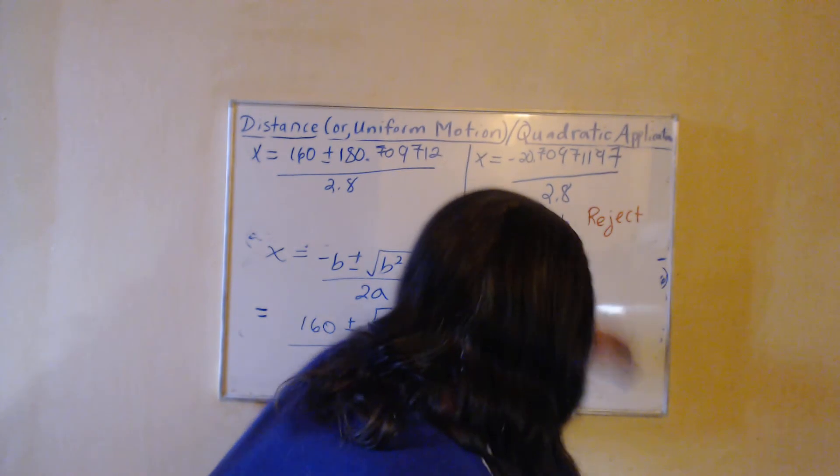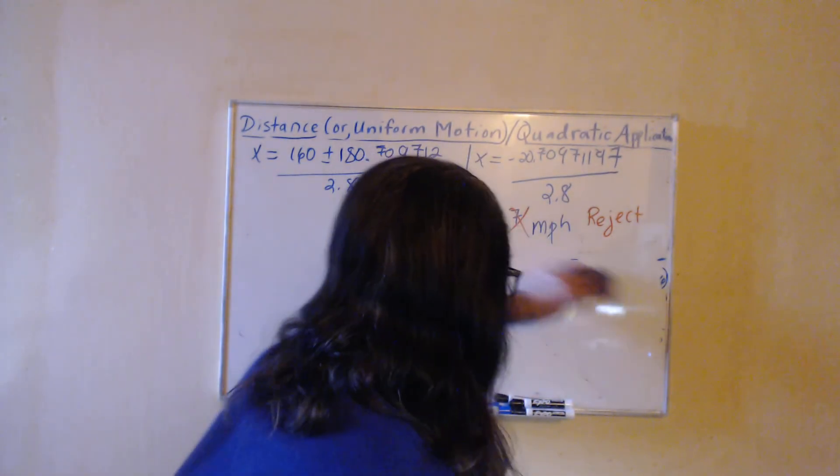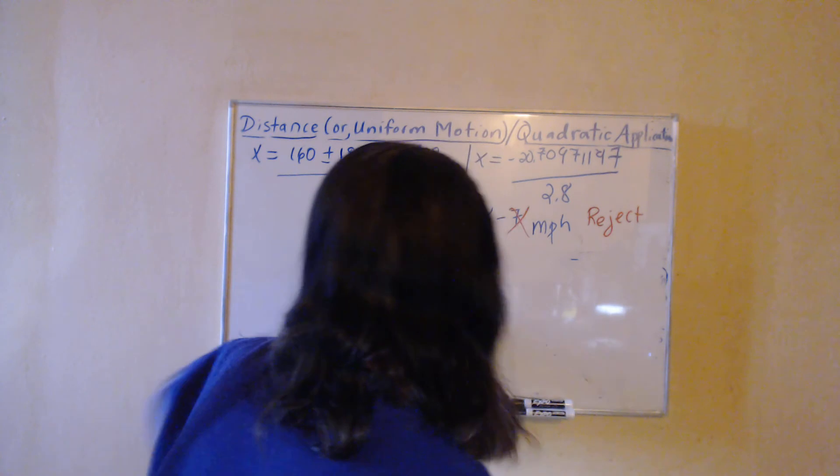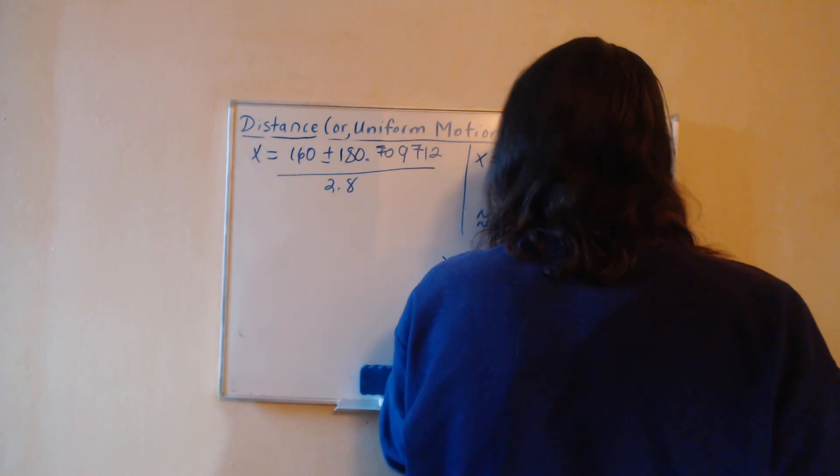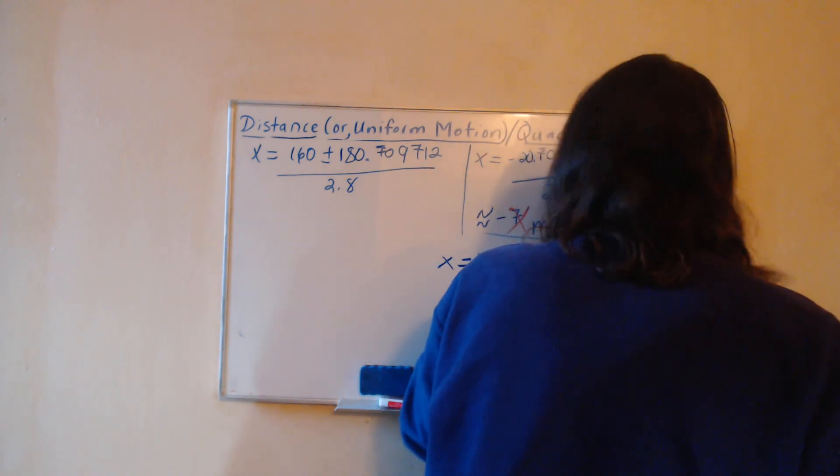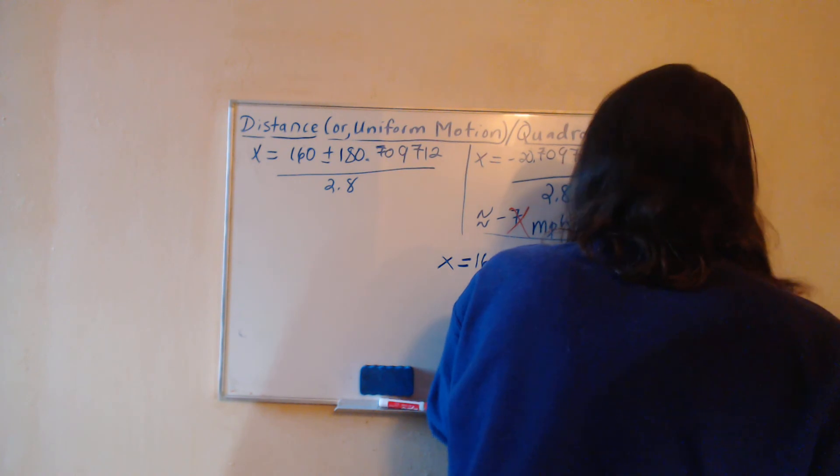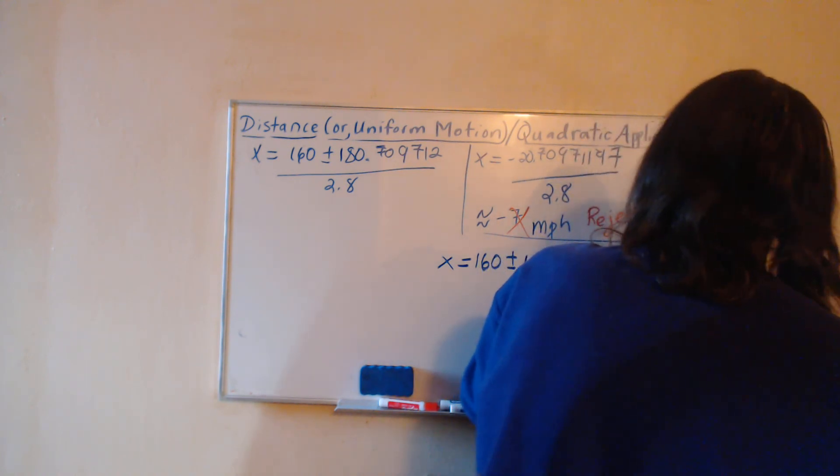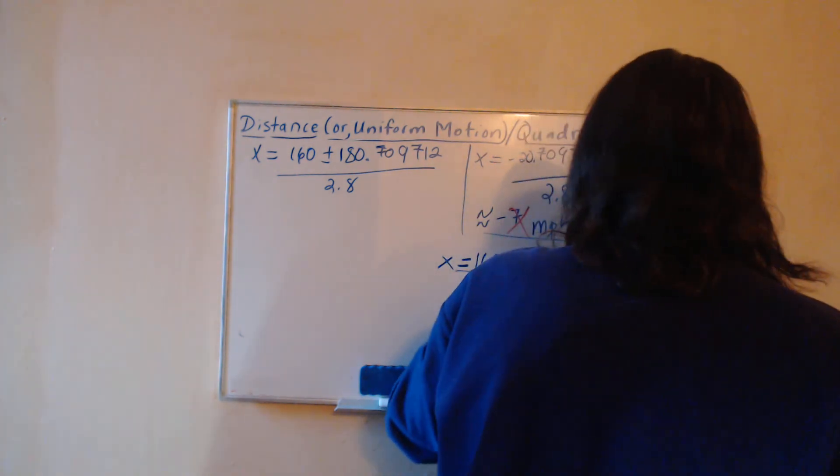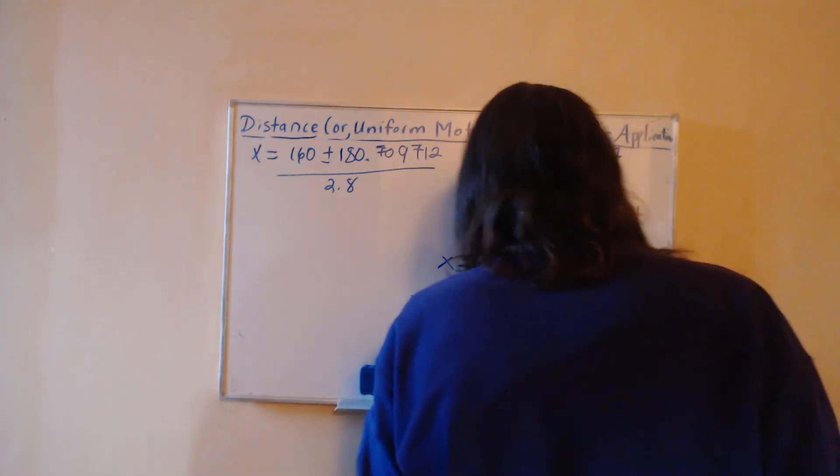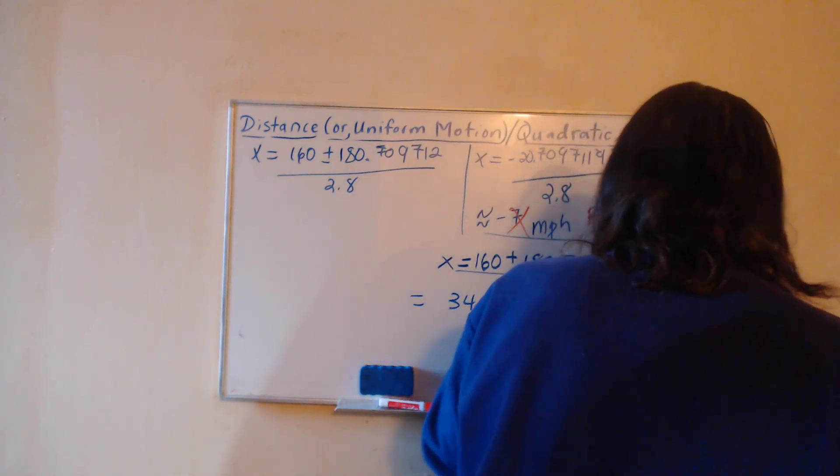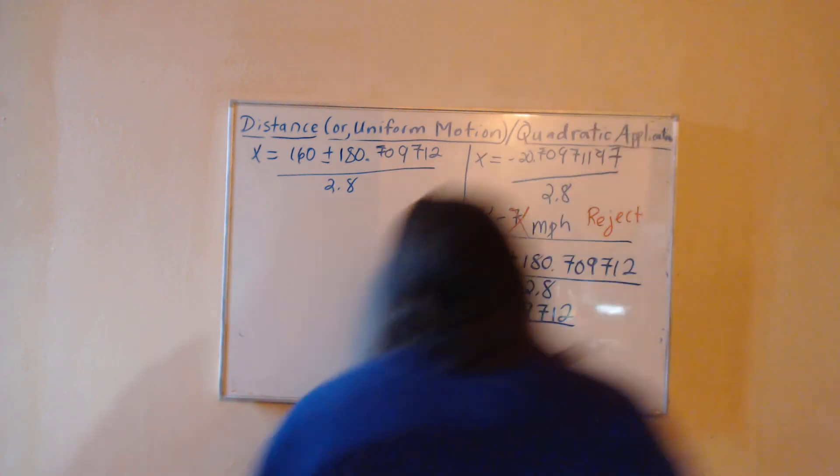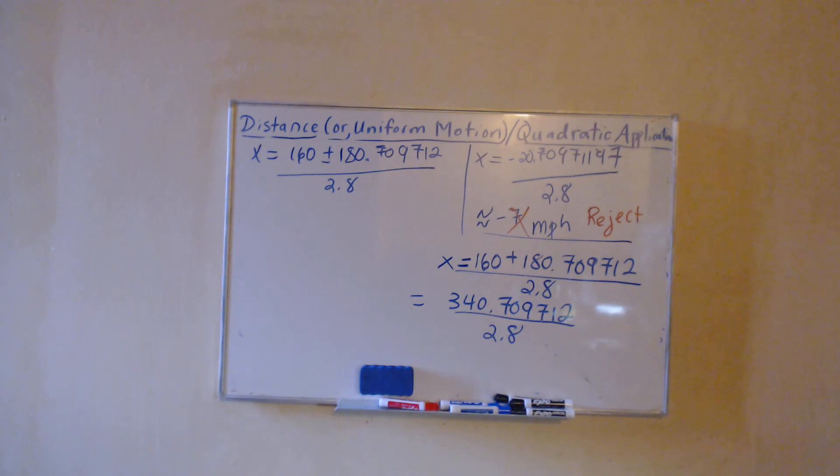And take the addition case, which gives us 340.709712 divided by 2.8. I don't want to do any of my rounding until the very end.